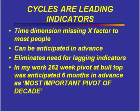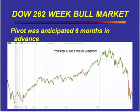In my work, we had a 262-week pivot at the top back in 2007. I had told people about this pivot that was coming. I thought it could be the most important pivot of the decade — and perhaps the top was the most important pivot of our lifetime. This is the bull market from the bottom in 2002 to October 11th, 2007. It was exactly 262 weeks.